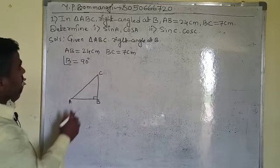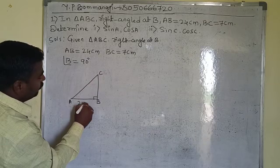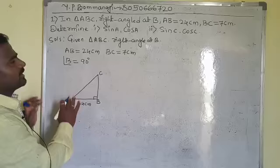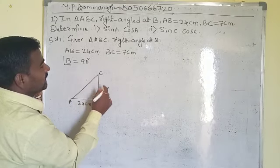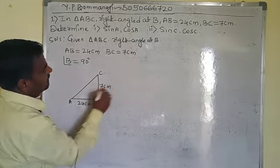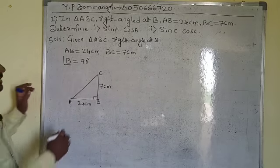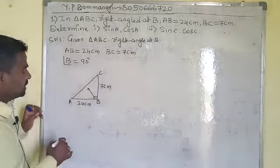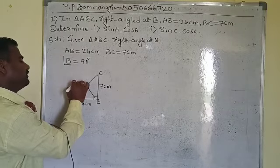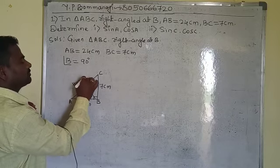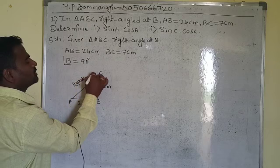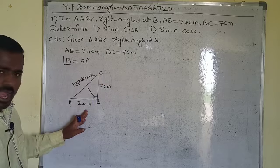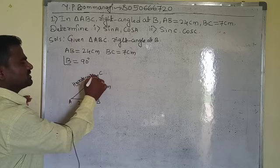You can draw the diagram approximately using a scale. AB is 24 centimeters, BC is 7 centimeters, and they are asking about opposite and hypotenuse. So here we can point out the hypotenuse first — AC is the hypotenuse of this right-angled triangle.